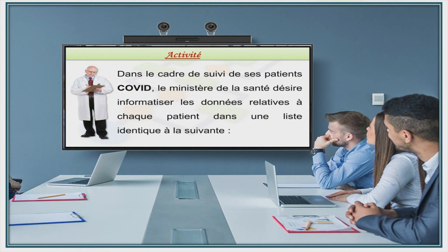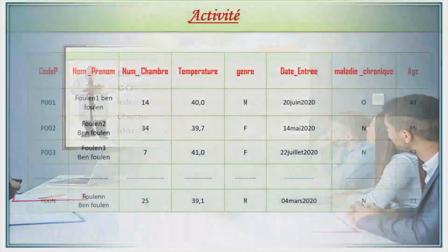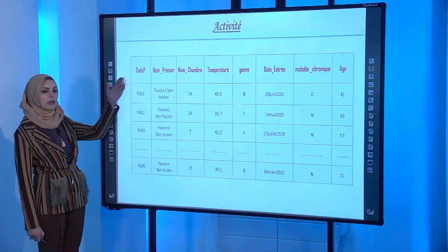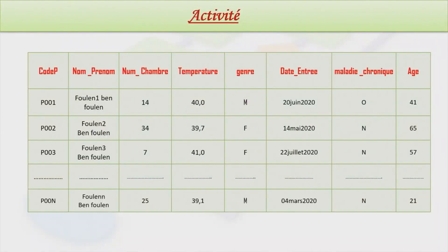On passe maintenant à une activité de mise en situation. Dans le cadre du suivi des patients COVID, le ministère de la Santé désire informatiser les données de chaque patient : le code patient, le nom et prénom, le numéro de chambre, la température corporelle, le genre (M/F), la date d'entrée, la maladie chronique (O/N), et l'âge.